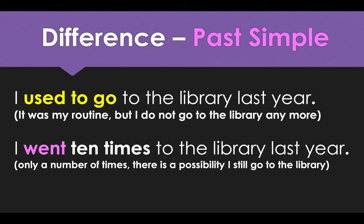Let's look at other examples. 'I used to go to the library last year' — it was my routine, but I don't go to the library anymore. Instead, if I say 'I went ten times to the library last year', obviously we need the past simple because there is a number of times — ten times — and there is a possibility I still go to the library. So in the first one, I don't go anymore; in the second one, I still might go.